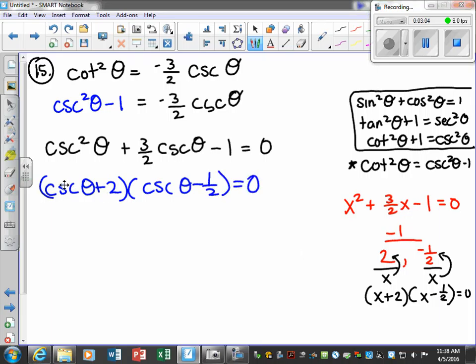So now we set this one equal to zero and solve, and then we set this factor equal to zero and solve. So that's going to be our next step. Cosecant theta plus two equals zero. And then the other one is cosecant theta minus one half is equal to zero.